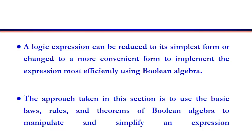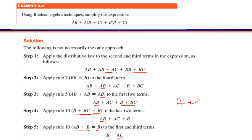Is lecture mein hum complex expression ko simplify karein ge, simplified form mein convert karein ge using laws, rules, and theorems of Boolean algebra. Ek example given hai: using Boolean algebra technique we have to simplify the expression. Expression given hai: AB + A(B+C) + B(B+C).